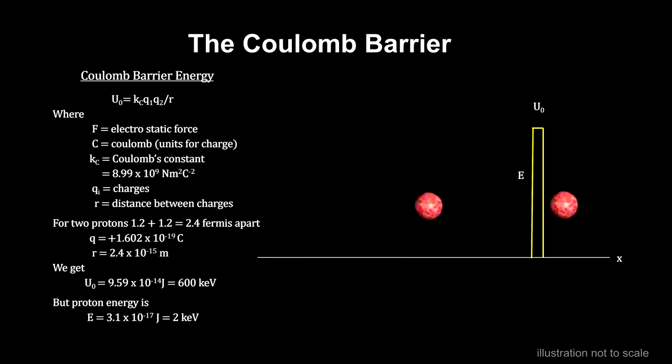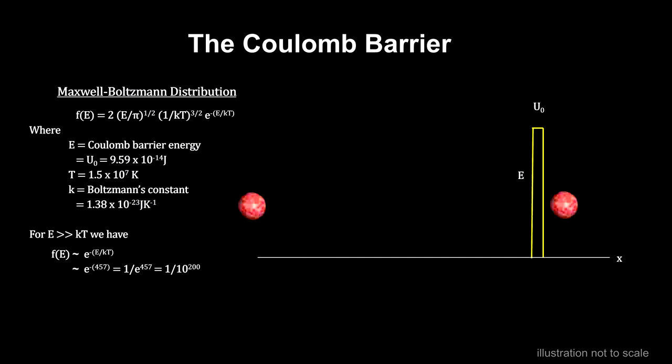To understand how often we can expect a proton to have the barrier's energy at the sun's temperature, we use probability distributions developed by James Maxwell and Ludwig Boltzmann in the mid-1800s. This analysis shows that only one out of ten to the two hundredths collisions would cross the Coulomb barrier.